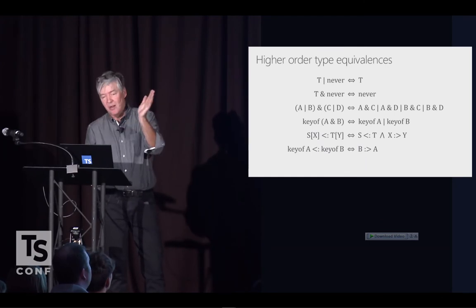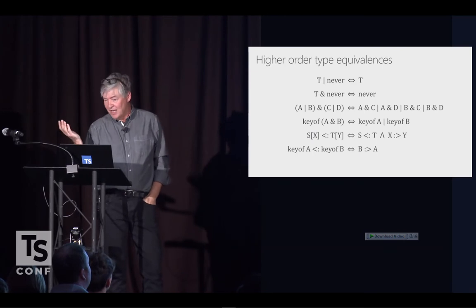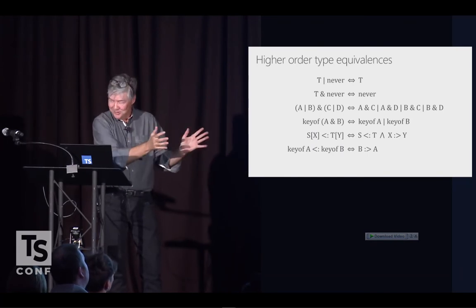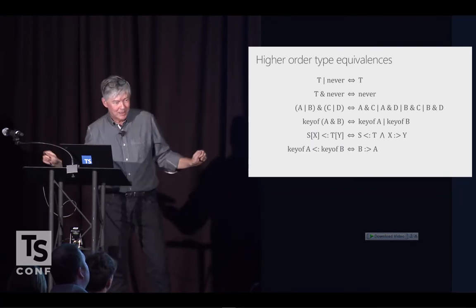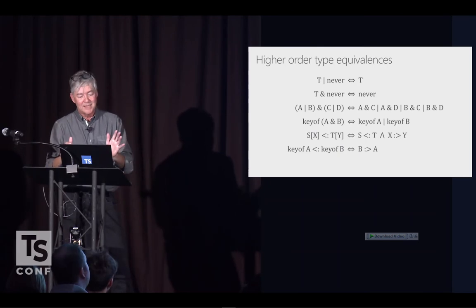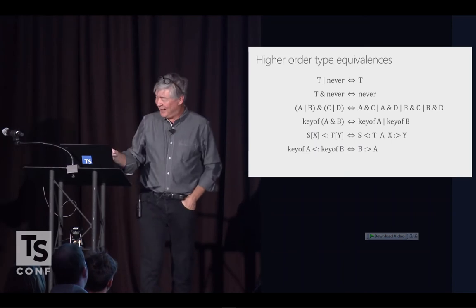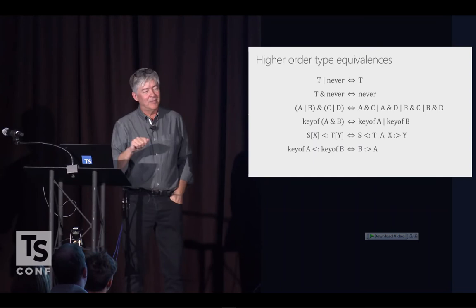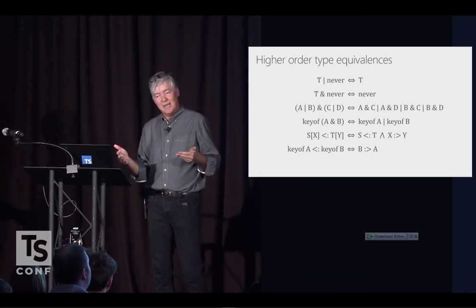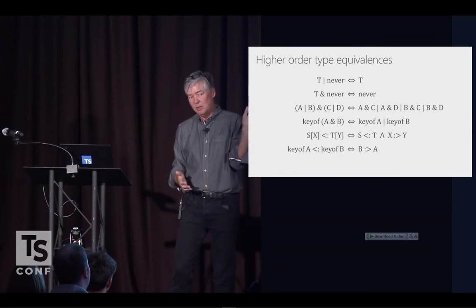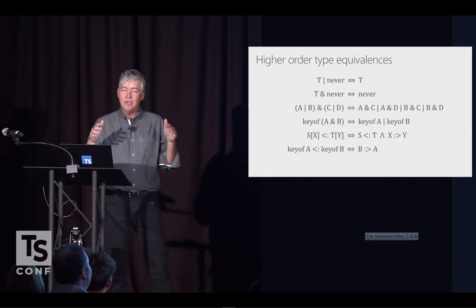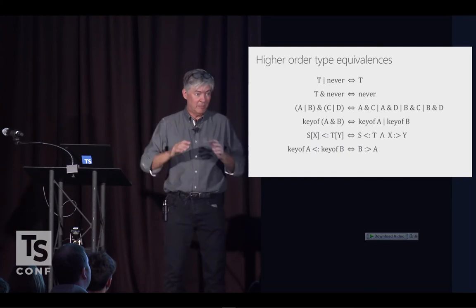Here are some examples of type equivalences. A union of T and the never type — the empty union — is just T. An intersection of T and never is never. If you intersect two union types you get a union of intersection types, because unions distribute over intersections. Keyof an intersection is the same as a union of the keys. This mathematically explains why they're called union and intersection types, and why people are sometimes confused. Union and intersection speak to the sets of possible values — the value domains.